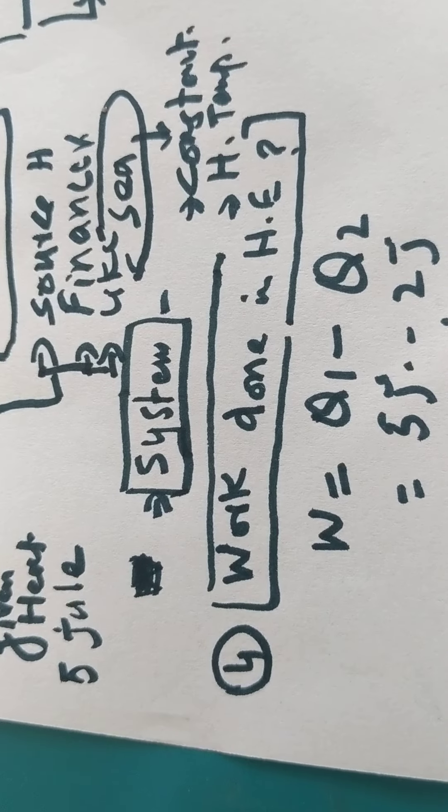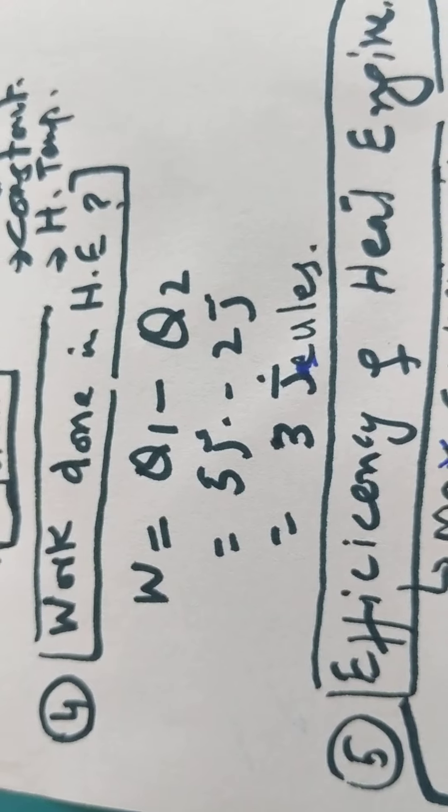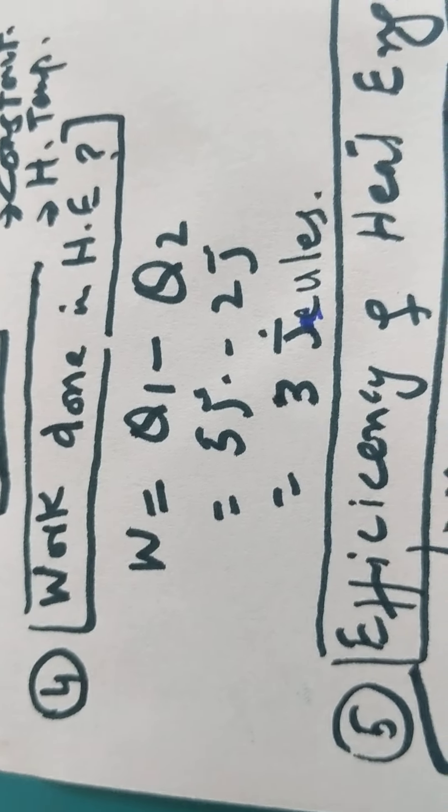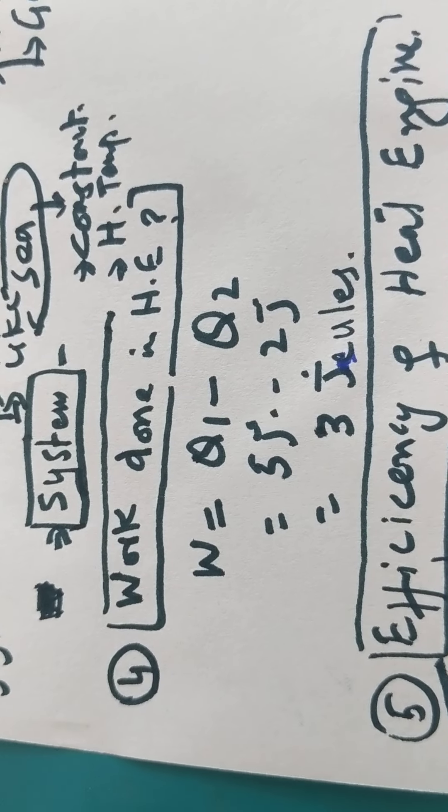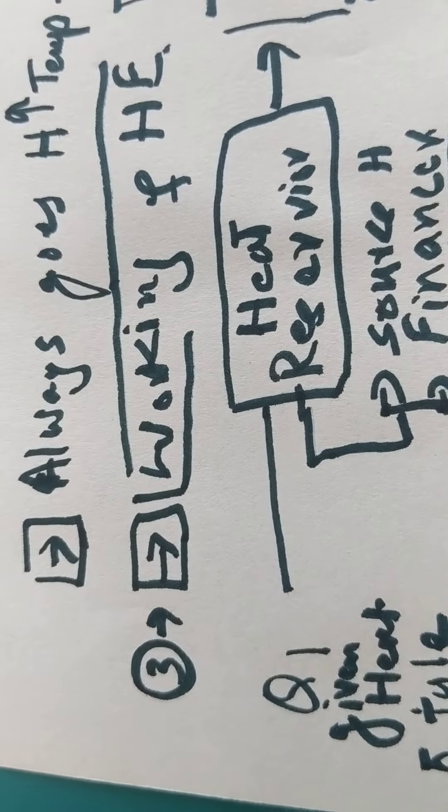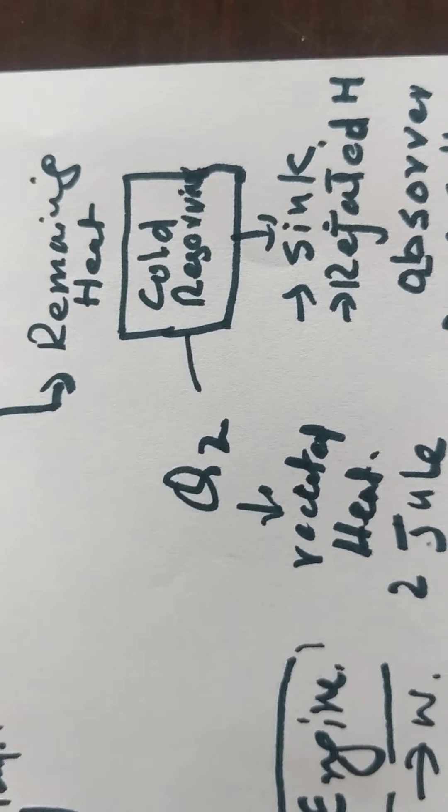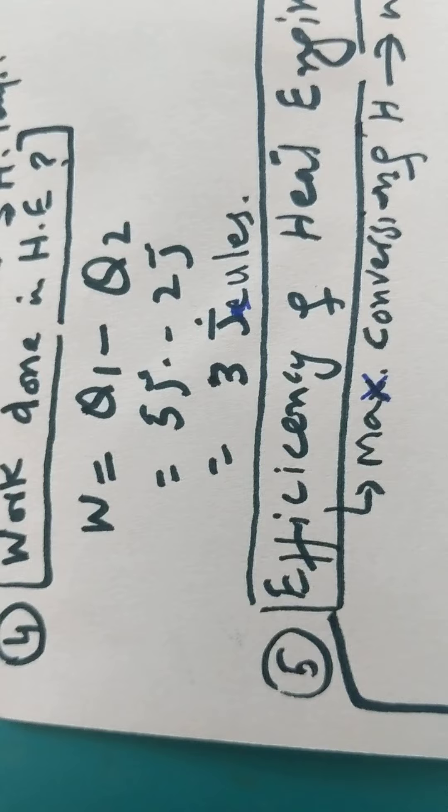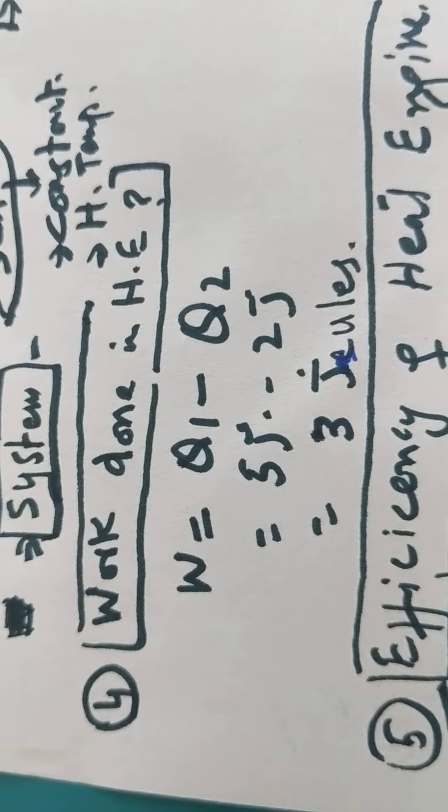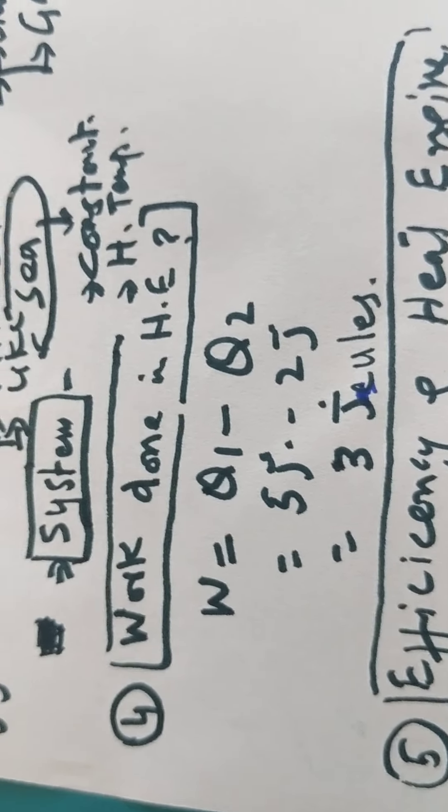Now, work done in heat engine. How can we calculate it? The formula is W = Q1 - Q2, where Q1 is the heat supplied to the engine - suppose it's 5 joules - and Q2 is the heat rejected through the system, which is 2 joules. So the work done is 3 joules.